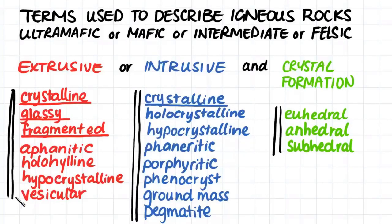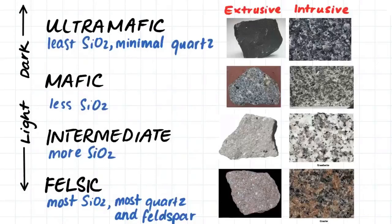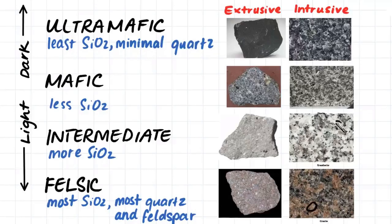We classify the rock as ultramafic, mafic, intermediate, or felsic. Ultramafic rock has less silicon, which means there is minimal quartz within the rock, making it darker, as quartz is a light-coloured mineral. Felsic rock, on the other hand, has the most silica, meaning it has the most quartz and often the most feldspar — this occurs because of Bowen's reaction series. In the felsic rock, the pink grains are feldspar and we can also see the quartz, while the ultramafic rock shows dark minerals with only small amounts of quartz.